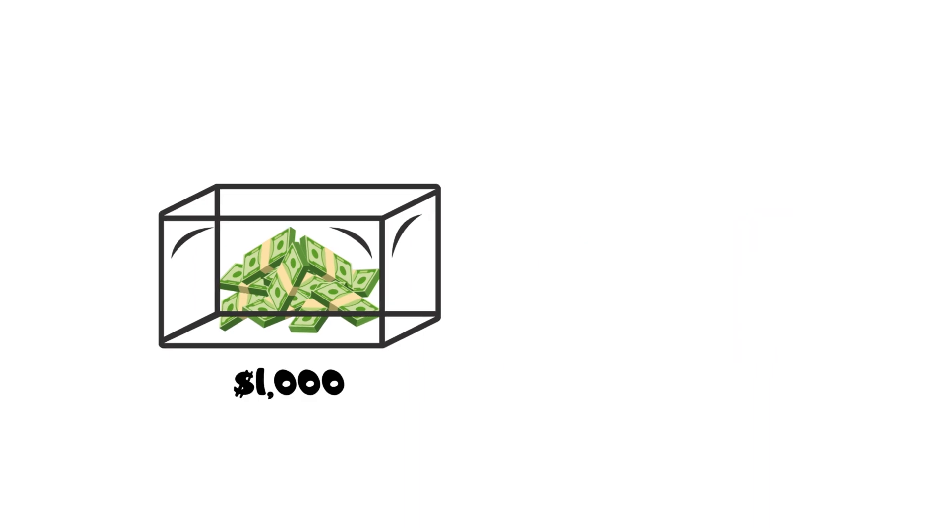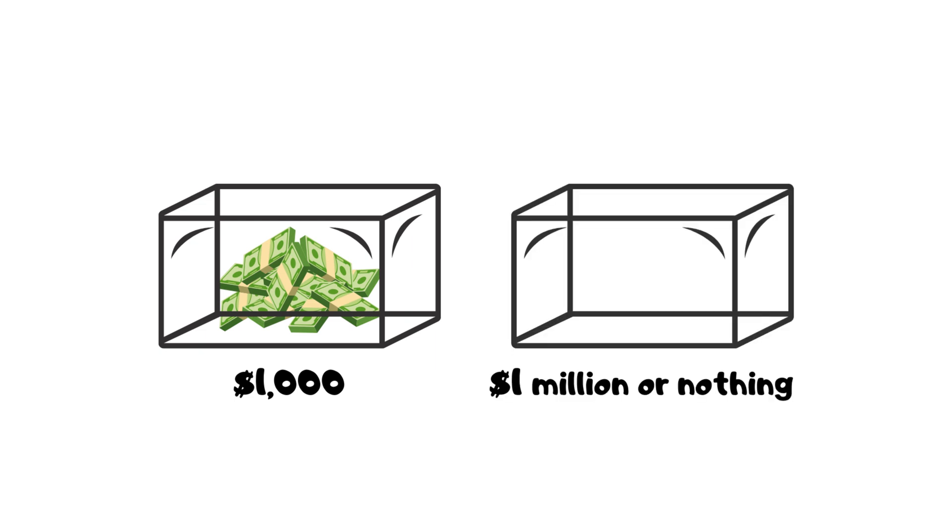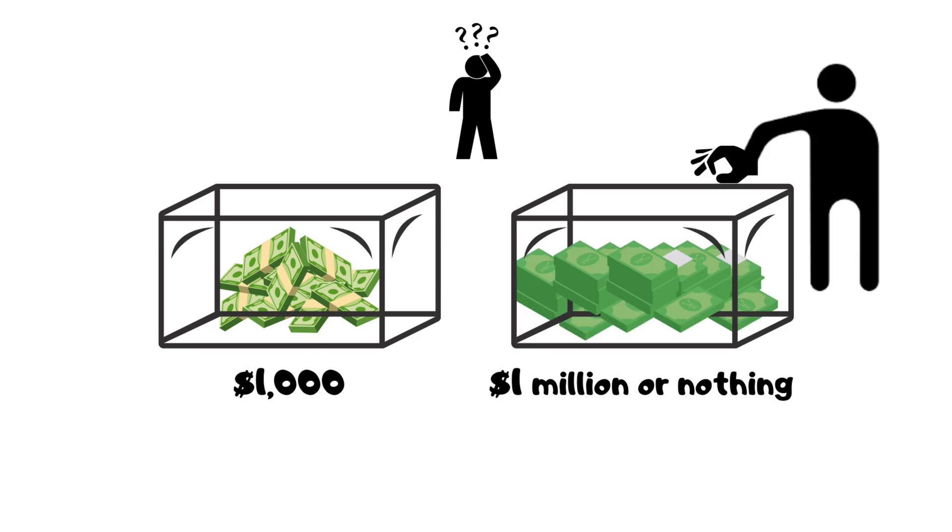Newcomb's paradox. You choose between a transparent box with $1,000 and an opaque box with either $1 million or nothing. And if you believe a nearly accurate predictor has placed the money, taking only the opaque box maximizes your potential winnings.